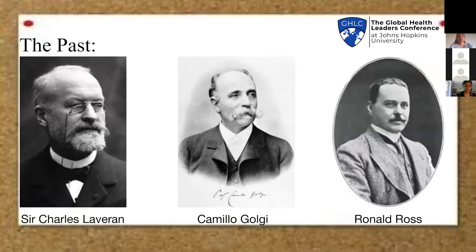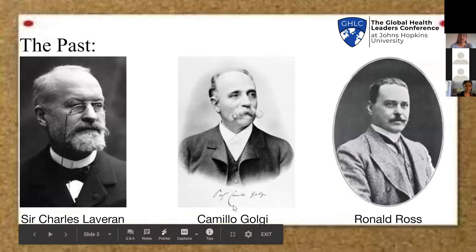These three gentlemen that you can see on the screen provided us with the initial information about malaria and the parasite. Sir Charles Laveran was the first to observe the parasite in human blood. Camillo Golgi observed the parasite in the red blood cells. Ronald Ross was the first to observe the parasite in the mid-gut of the mosquito, which gave us information about how transmission actually occurs from one human to another.